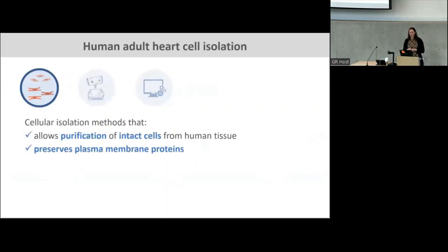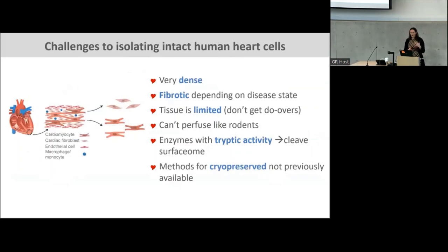To obtain the cells, we needed a method where we could start with a chunk of myocardium from the OR — either an LVAD implant or transplant — and isolate cardiomyocytes in a way that keeps them intact so that we can rescue all of those cell surface proteins. The challenges are that the heart is a very dense tissue, the degree of fibrosis can depend on the disease state making it really hard to dissociate those cells, tissue access is rather limited, and you can't hook a chunk of human heart up to a Langendorff perfusion system the way you can with rodent hearts. The enzymes commonly used to dissociate cells — trypsin or general proteases — would unfortunately cleave off all the cell surface proteins.